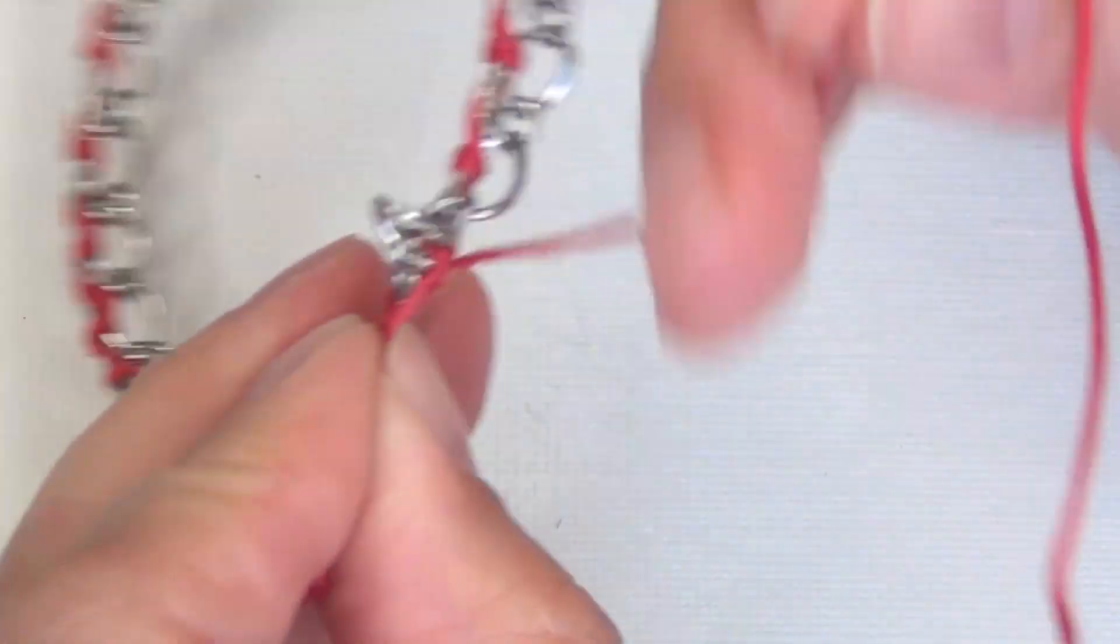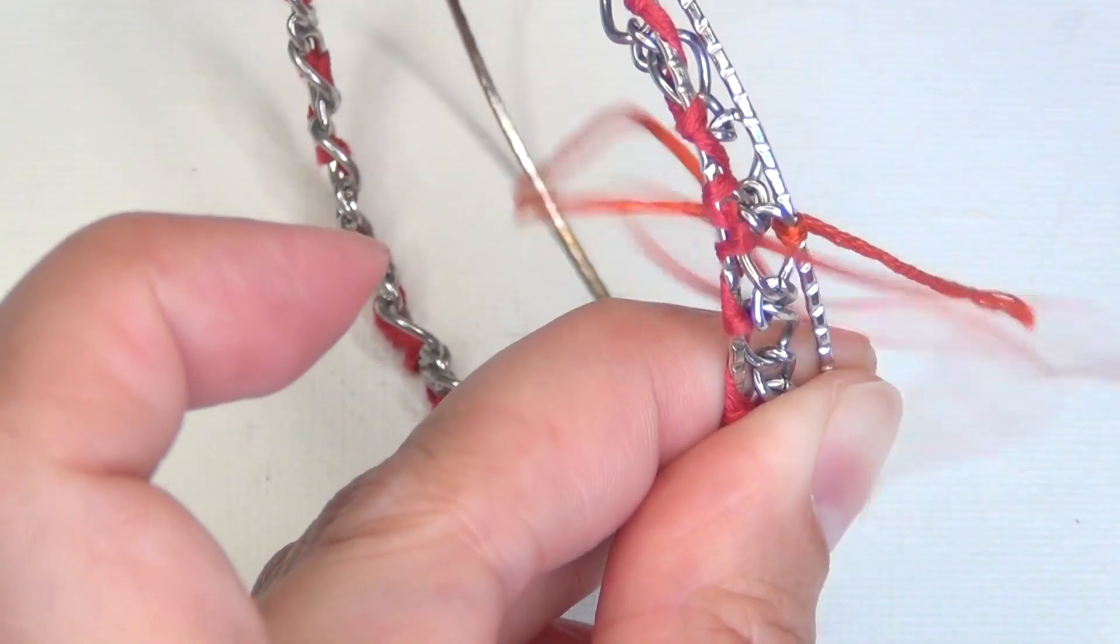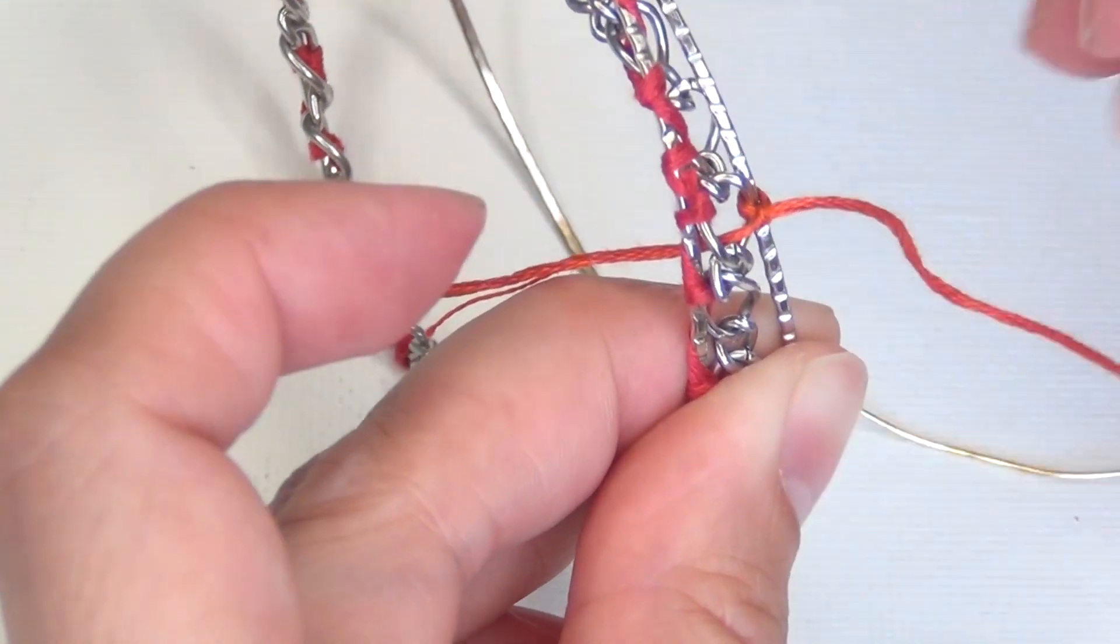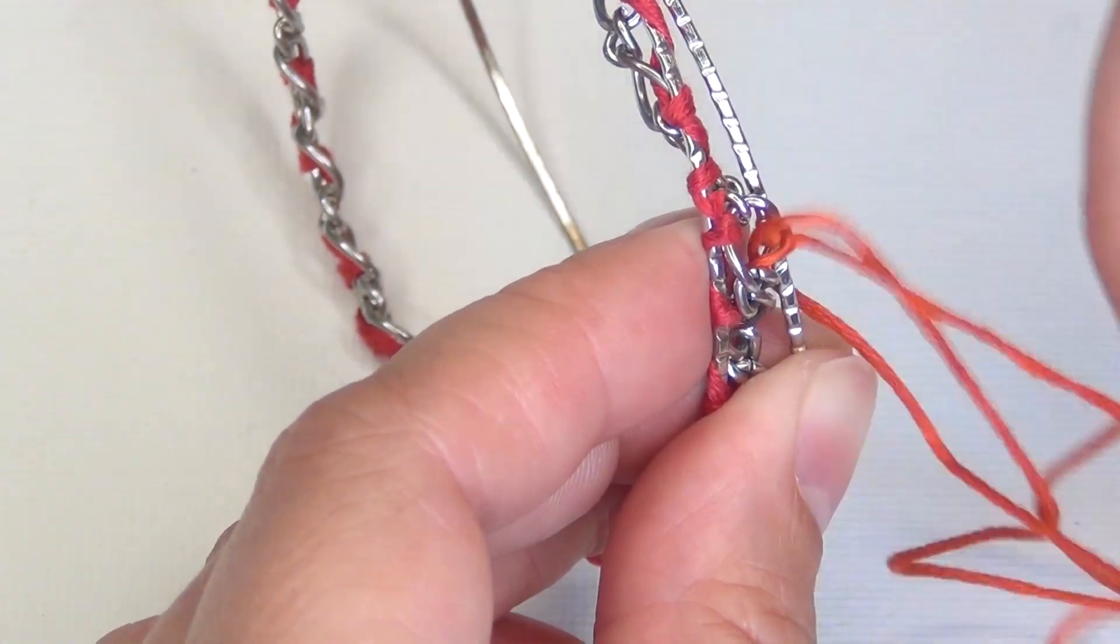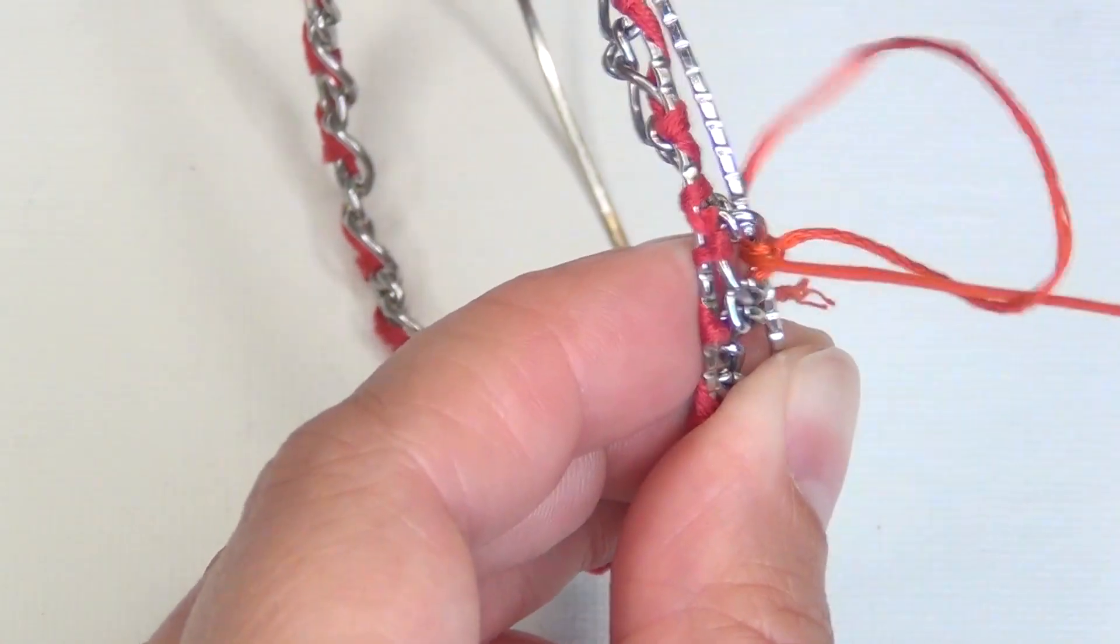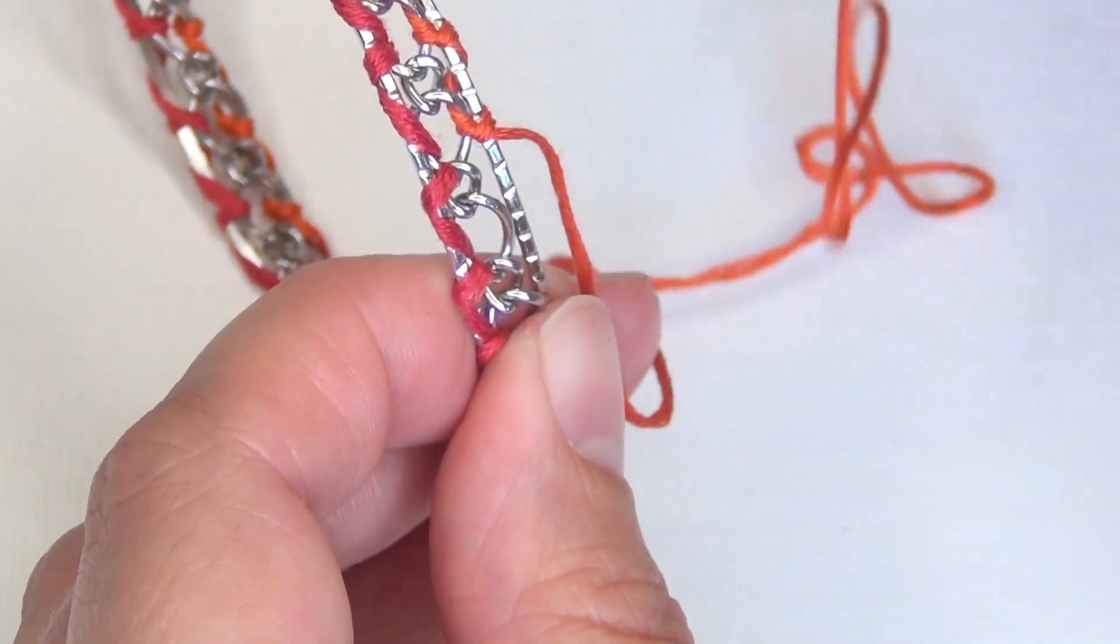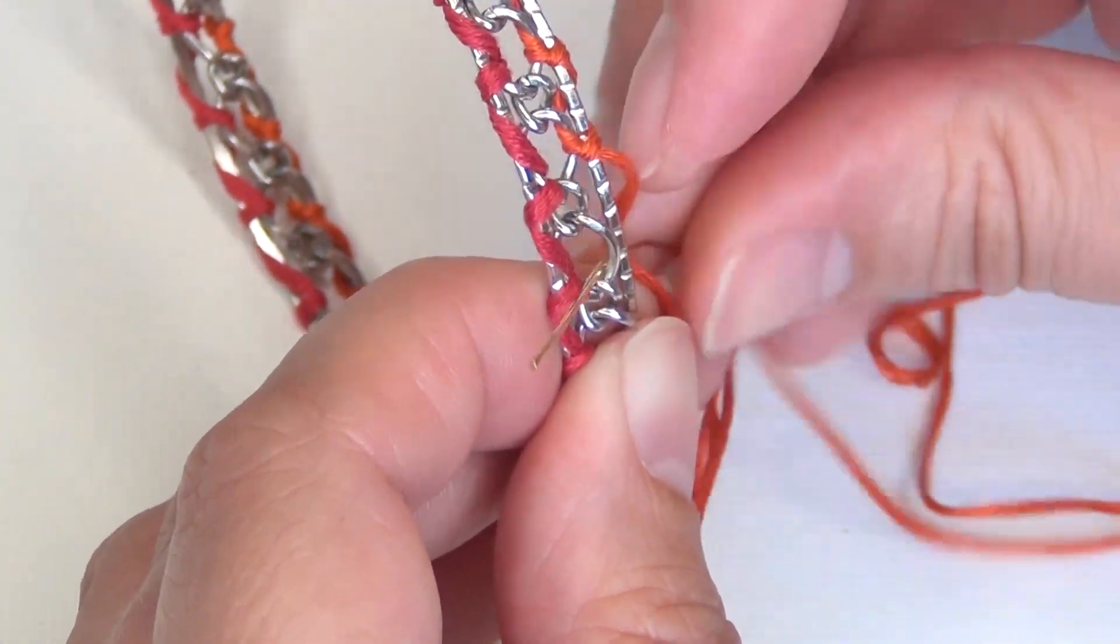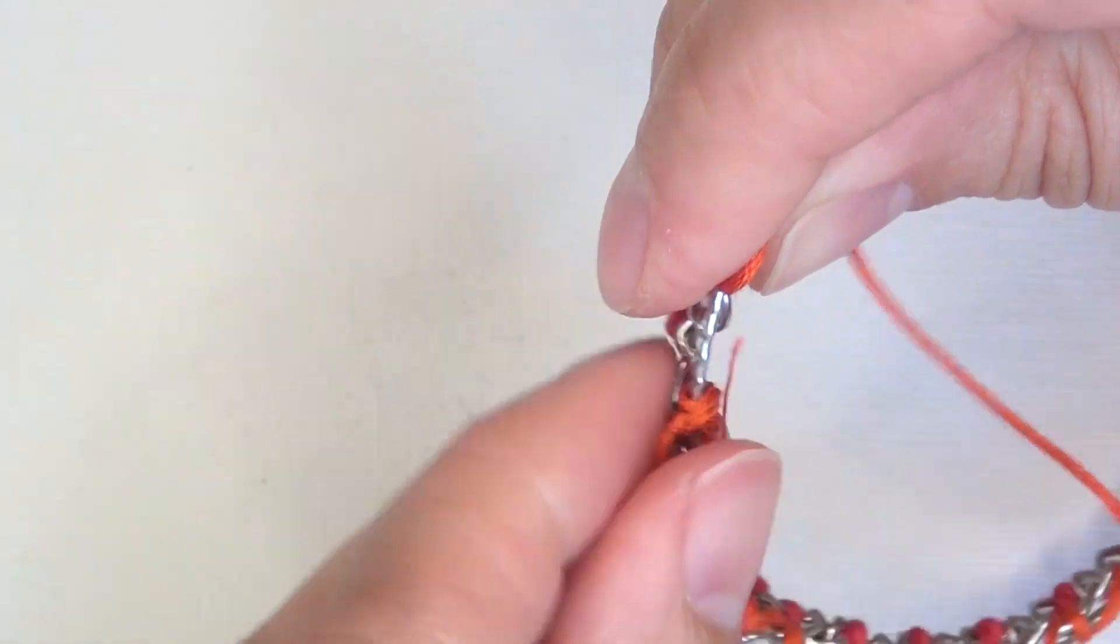Then you're going to take your second color of embroidery thread and repeat this exact same process. Except the chain is already going to be attached to the other bangle so it's actually a little bit easier to do it this time. You simply tie that chain onto your new bangle and then continue the exact same stitching process all the way around your bracelet until you get back to the beginning.